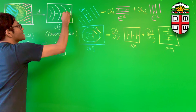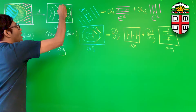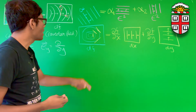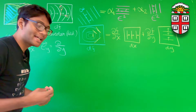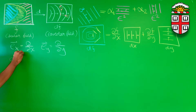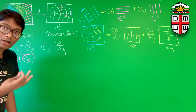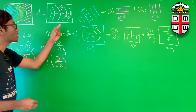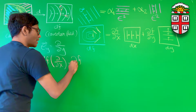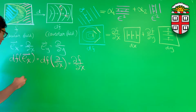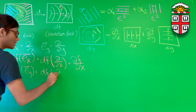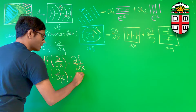Since e_x can be replaced with ∂/∂x, this becomes df applied to ∂/∂x, which is simply ∂f/∂x. Similarly, in the y direction, to figure out how many contour lines e_y pierces, we apply our co-vector field df to e_y. That becomes df applied to ∂/∂y, which of course becomes ∂f/∂y.